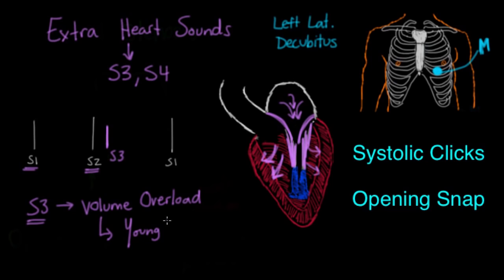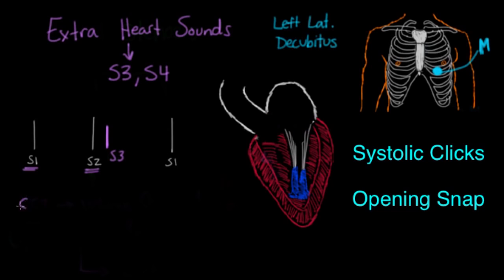In elderly patients, S3 is usually due to heart disease — something like congestive heart failure — where too much volume is coming into the ventricle. There are many other conditions that can cause S3, but for our purposes, let's just know that it's related to volume overload.